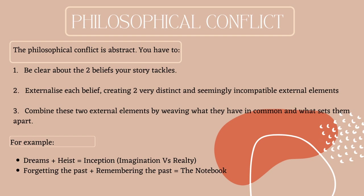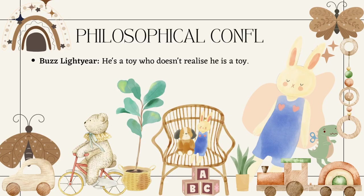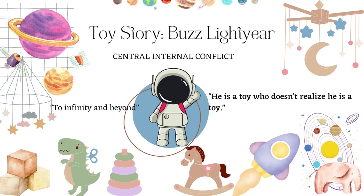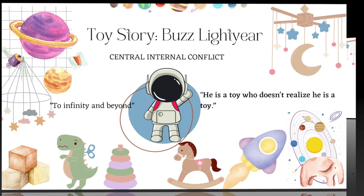Secondly, two distinctive and incompatible elements — forgetting the past plus remembering the past — equals the movie The Notebook. We are going to assume you have watched Toy Story. If not, spoilers alert. Buzz Lightyear represents the film's central internal conflict in Toy Story: he is a toy who doesn't realize he is a toy. Because the other toys are aware of their existence, this conflict defines his role in the assembled cast.